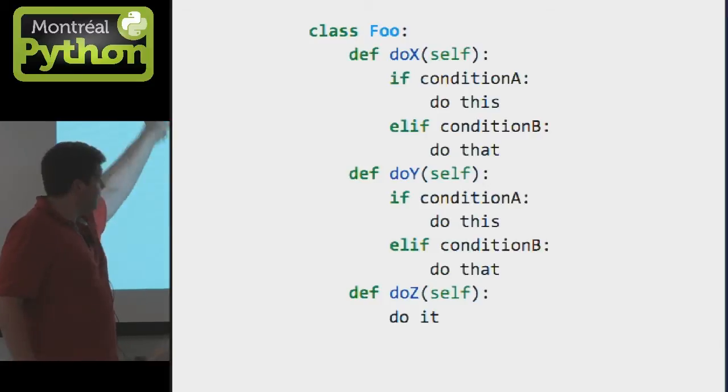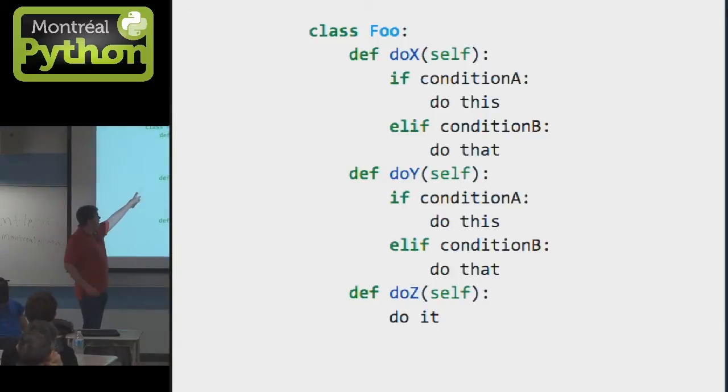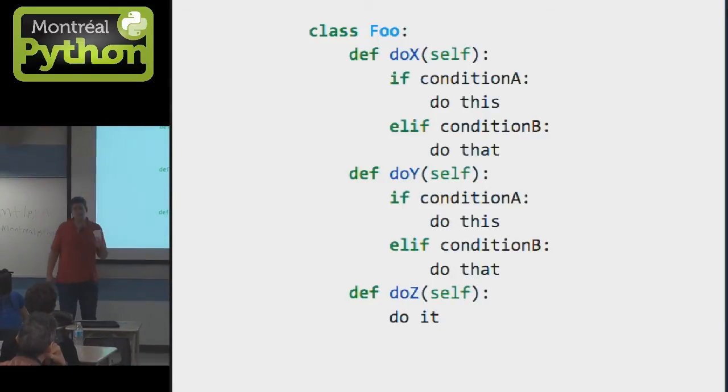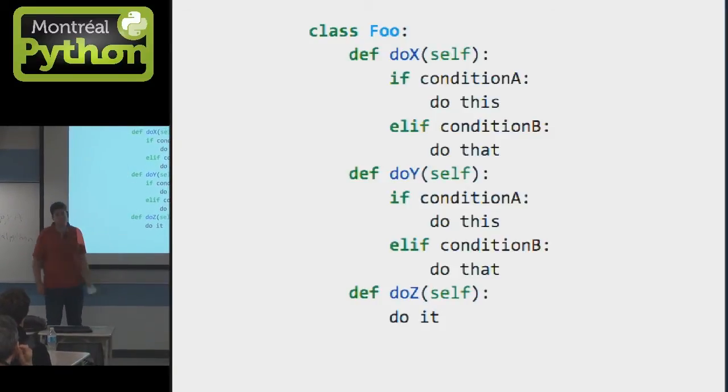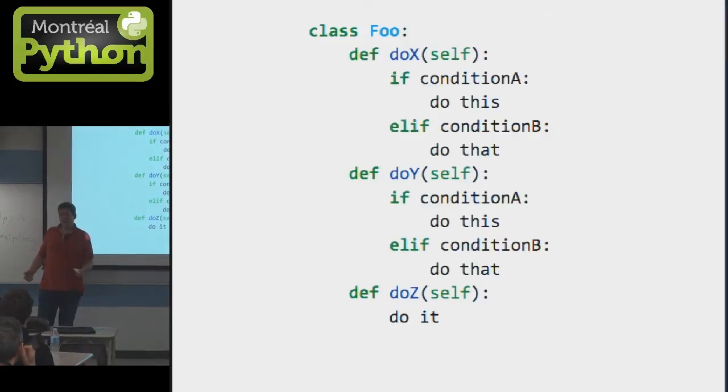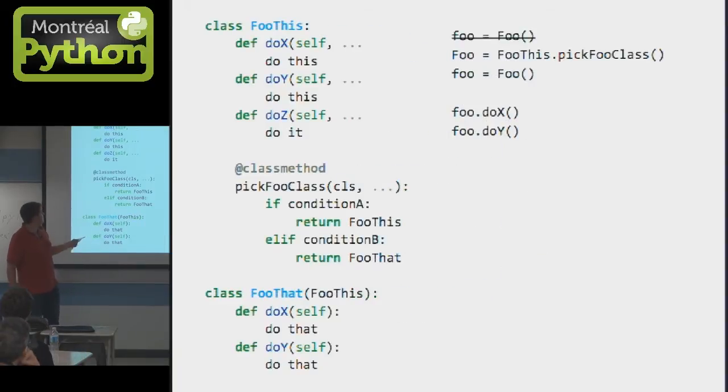And you start peppering all your code with these if-else's, if-elif conditions, and you start wondering to yourself, this is really long. Also, do notice, I have condition A and condition A here. Nothing stops me from making an error one day, committing a change for condition A, changing it a bit, but forgetting to make the second change up there. And suddenly I've added a bug in my code because there is code duplication in this case.